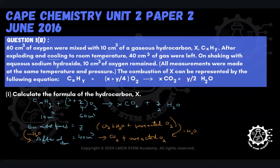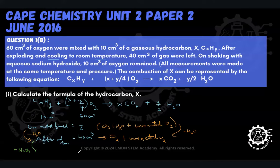On shaking with aqueous sodium hydroxide, we're going to take this 40 cm³ mixture — which contains carbon dioxide and unreacted oxygen — and shake it with NaOH. After doing that, 10 cm³ of oxygen remained as the final volume. So that 10 cm³ is comprised of unreacted oxygen.